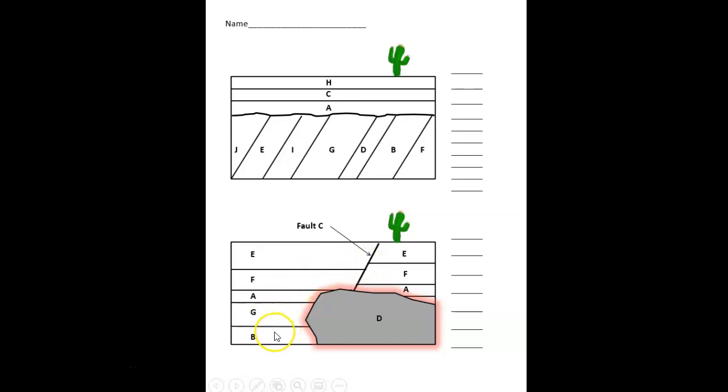Fault C is older than D. And if C must have cut through everything, then everything had to be there before C. So the order for this sequence had to be B, G, A, F, E. Then there was a fault that cut everything. And the youngest thing is this intrusion of molten rock that came in and cut across C and these units here and baked them. Even though it doesn't directly affect E, I can figure out the order because of C and D and their relationship. So the order would be B, G, A, F, E, then fault C, and then D.